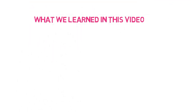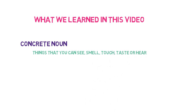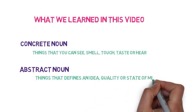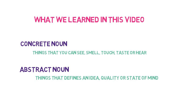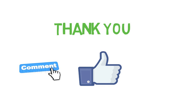So that's all in this video. What we have learned: we discussed about concrete nouns — things you can see, smell, touch, taste or hear. And we discussed about abstract nouns — things that define an idea, quality, or state of mind. So now we have covered all the categories of nouns. Thank you for watching. If you have any questions or suggestions, please write in the comment section. If you liked it, please hit the like button, share the video so others can learn, and subscribe to this channel to get regular updates about the course. Thank you.